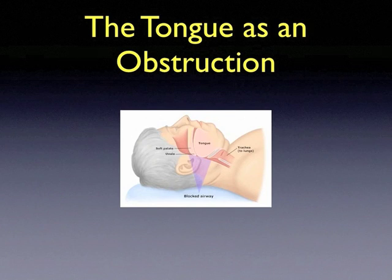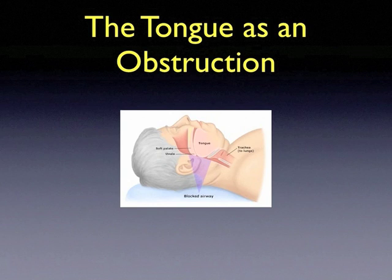The tongue is the single biggest obstruction that you will face in basic airway management. Notice on the slide that with the patient in a supine position, in the setting of a loss of protective airway reflexes, the muscles of the tongue fall backwards and impinge along the backside of the throat, obstructing the airway.